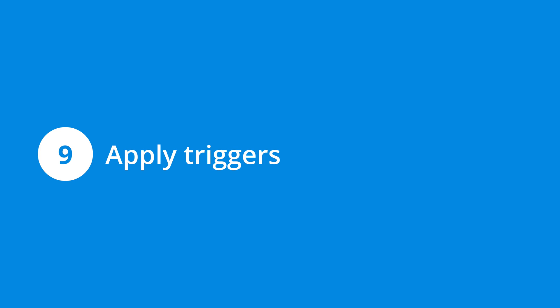Step nine is to apply appropriate triggers to your tags. For example, when you add the default page view tags for Google Analytics, you can use the built-in all pages trigger, which means the tag fires on every page of your website. For tags that need to fire on individual pages or for specific actions, you'll need to create custom triggers. Triggers can be based on a whole range of actions — from the page someone is viewing, to the element they click, to watching an embedded YouTube video. I've included a link to my Google Tag Manager glossary in the description.